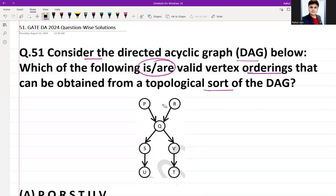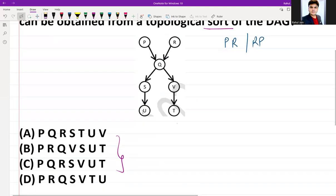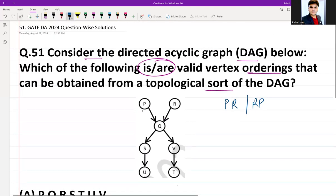At the end I am going to see PR or I am going to see RP, correct, in any sequence. But you can see the options all are starting from P, so I am going to follow the PR sequence, not RP. Now PR, what are the further possibilities from both the nodes? I need to go to Q. Now from Q I can choose S, I can choose V also.